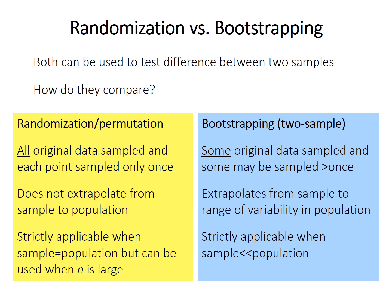So as a result, randomization is strictly applicable when the sample is the population. And this is maybe the case when you're comparing experimental results. You did a bunch of experiments and you want to know what's the probability of observing this sort of outcomes. And bootstrapping is more applicable when your sample is much smaller than the population, which is most of the time in observational statistics.